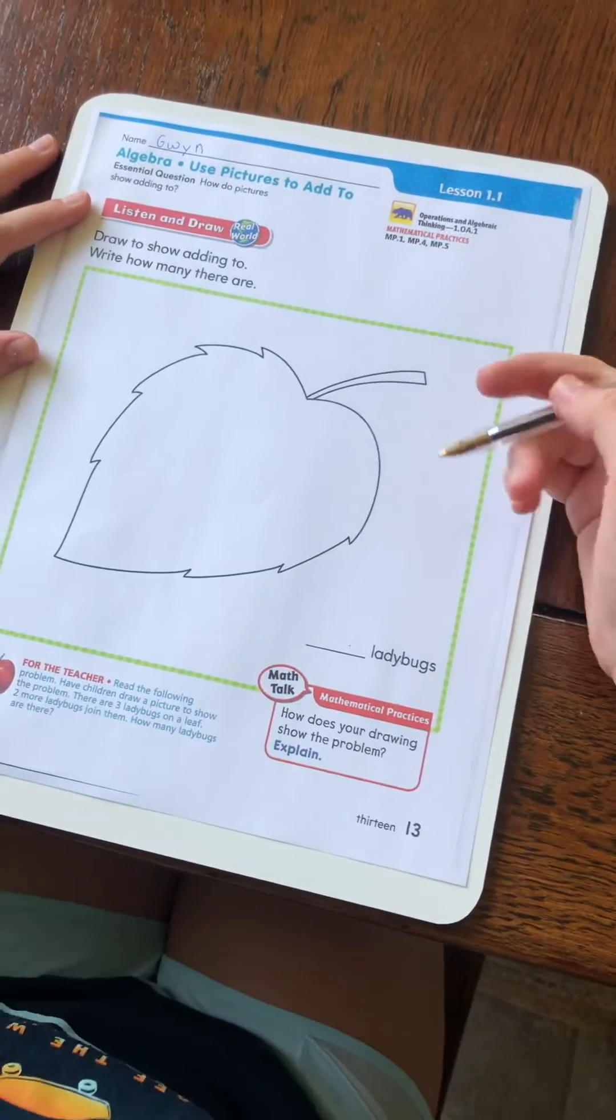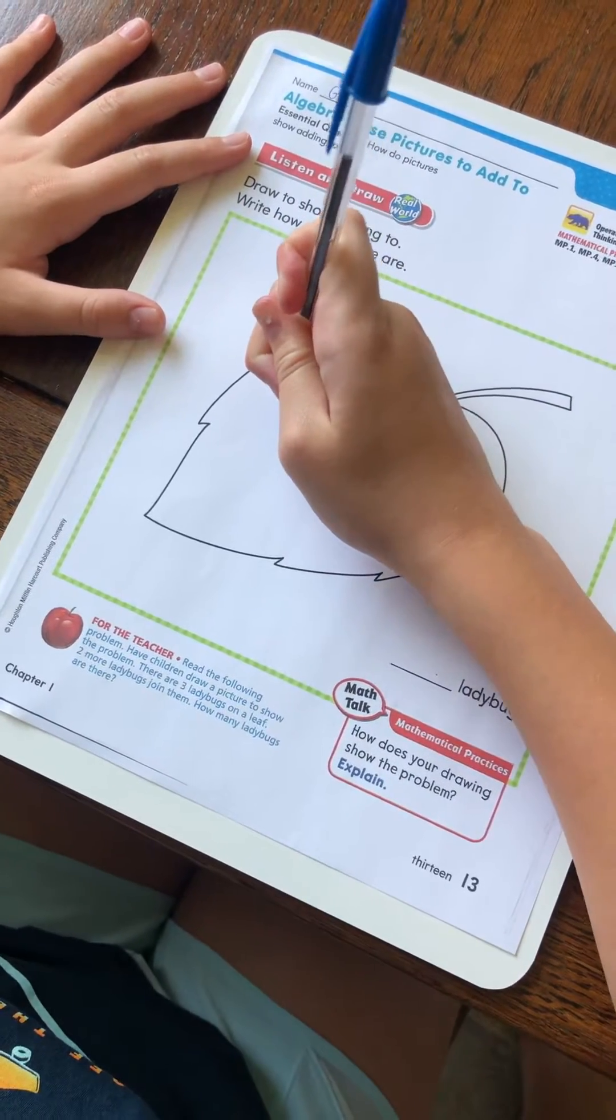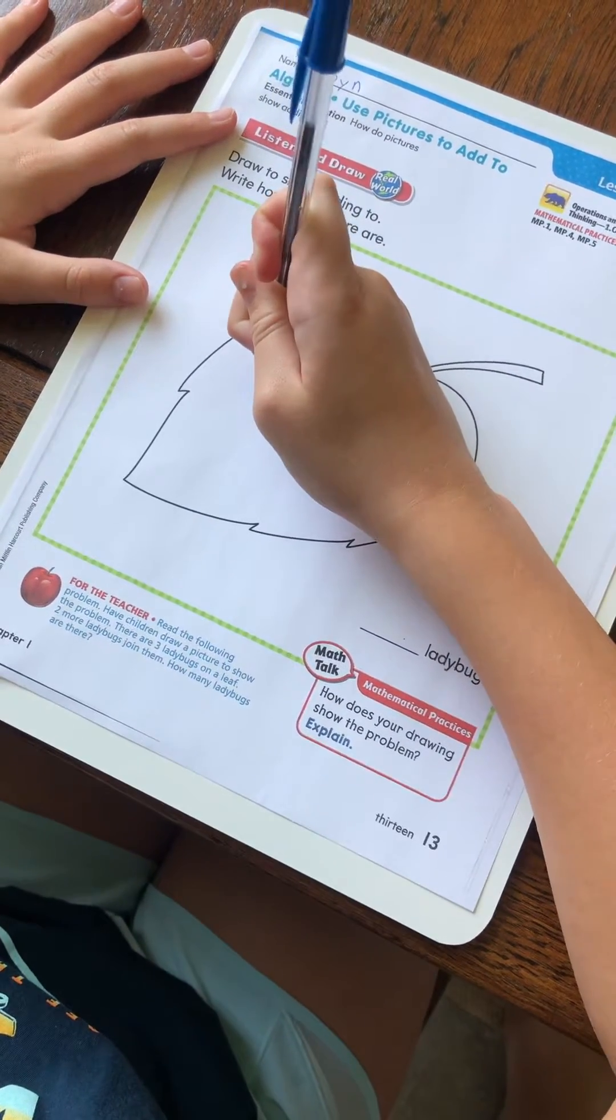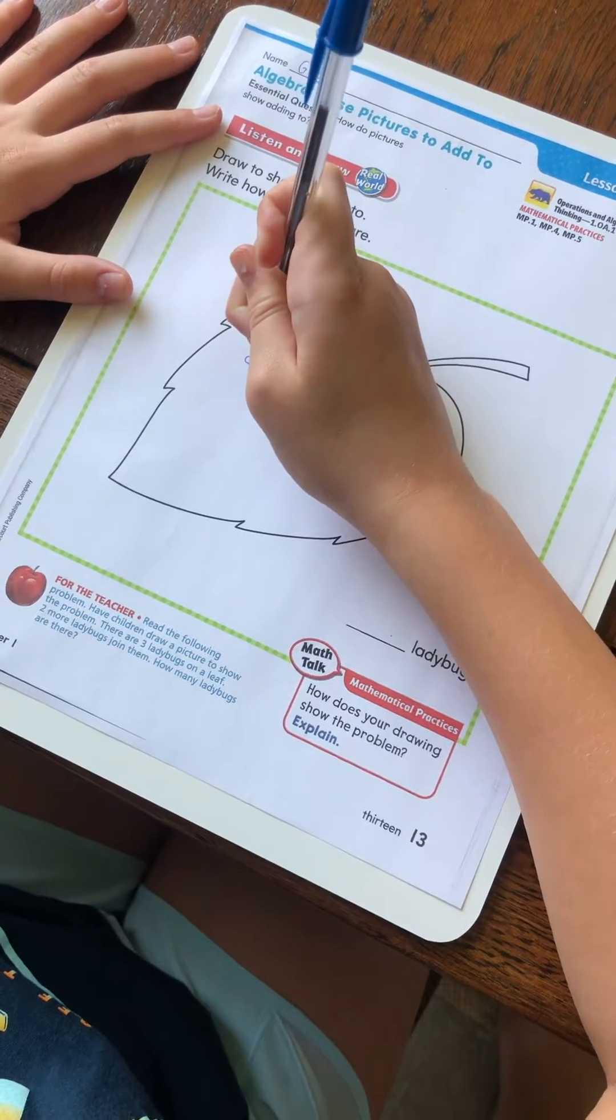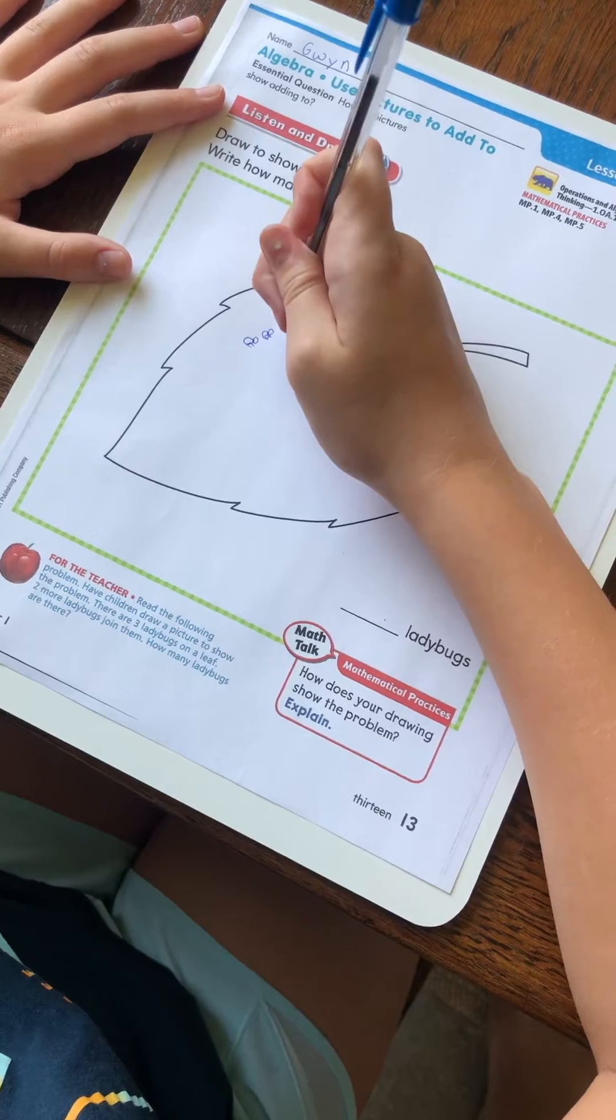So first on this leaf, I'm going to start by drawing three ladybugs. So, one, two, three.